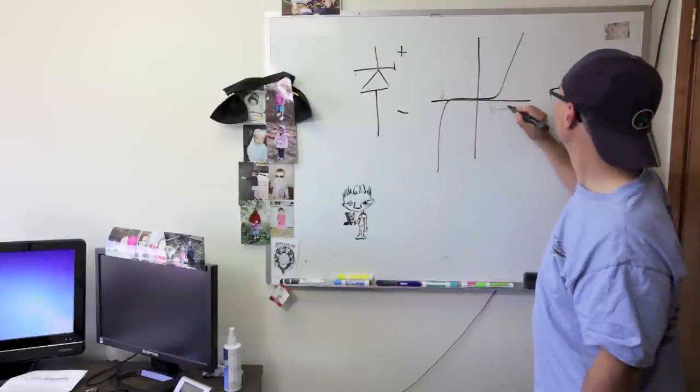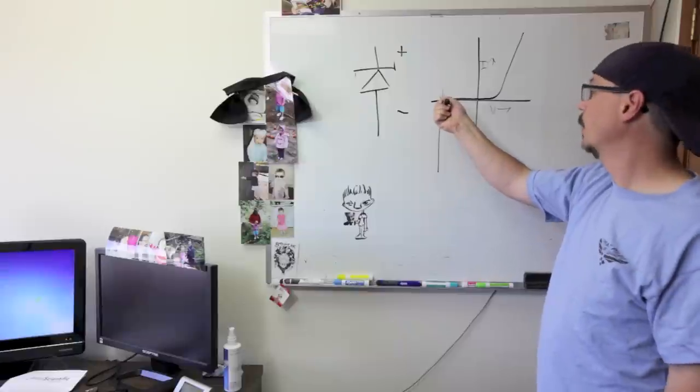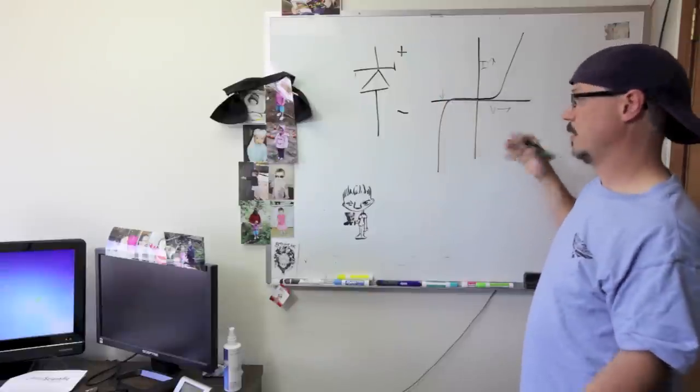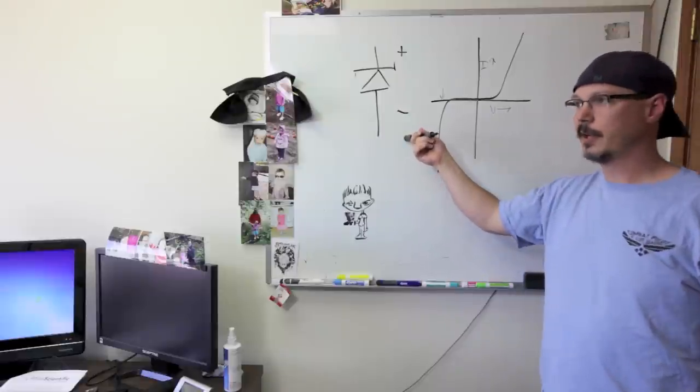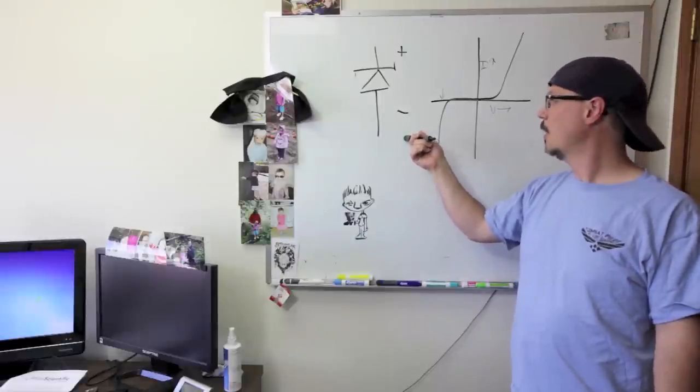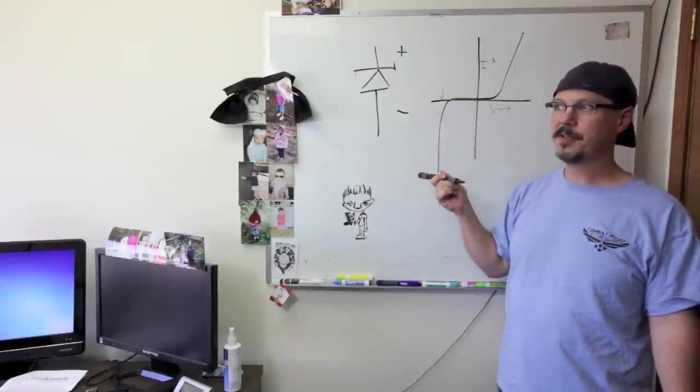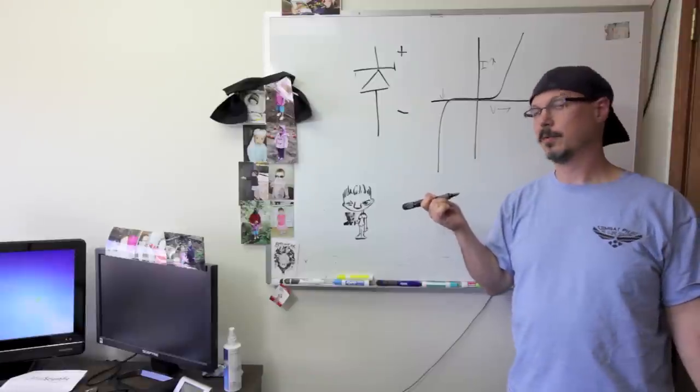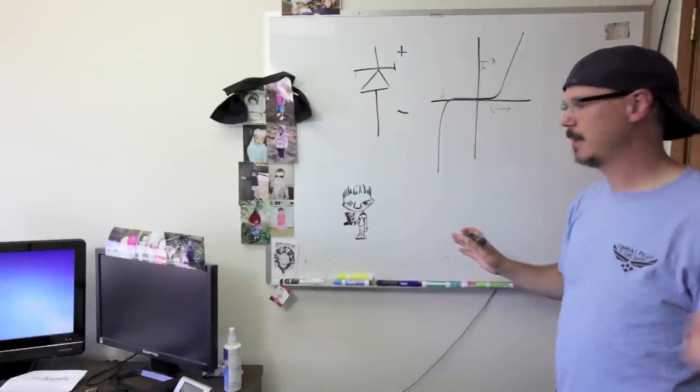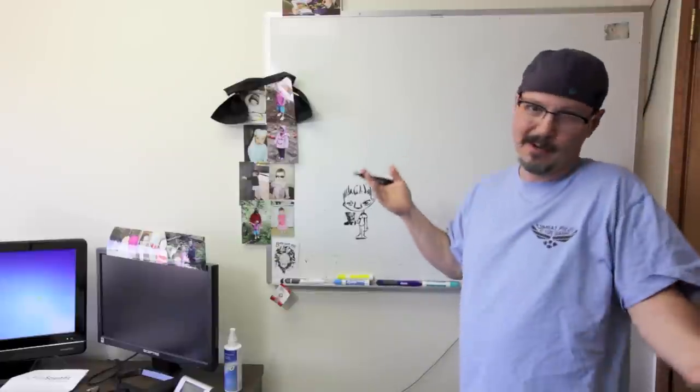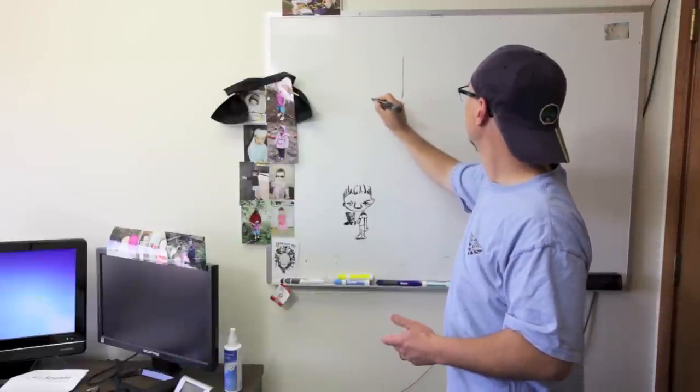And you can buy zener diodes so that this voltage here, this is voltage, this is current, this voltage can be very, very specific. And you can buy a range of them. Normally, where you would use a zener diode is like in a voltage reference, because they're pretty stable once they get to the breakdown region. You might also see it in a really, really bad design as a voltage regulator, but don't ever do that. That's bad, bad, bad.